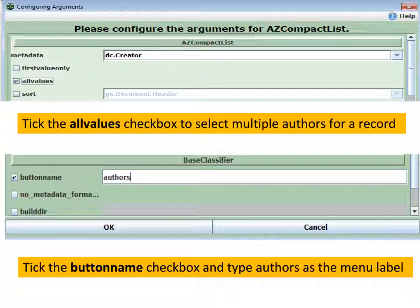The other thing we usually want to change is the menu label. By default, the menu label is the same as the element name — in this case, 'creators.' That is not necessarily a good menu label; it may confuse people. It would be more usual to see something like 'author' or 'authors.' So we're going to change the menu label to 'authors.' Notice it's all lowercase because one of the default styles in Greenstone is to lowercase all the menu labels. Later on we can change that through style.